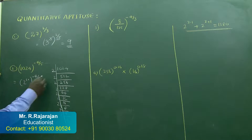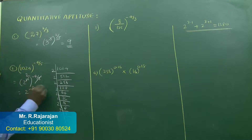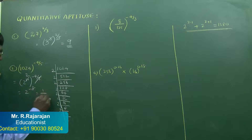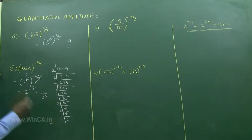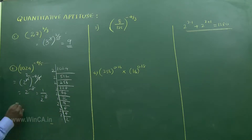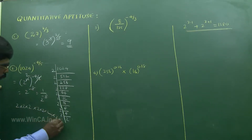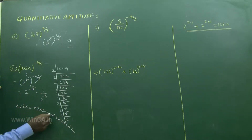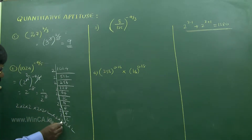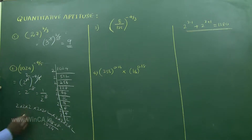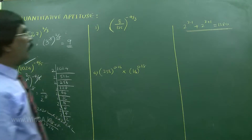You can cut this — it becomes 2 to the power of minus 8, which means 1 by 2 power 8. What is 2 power 8? Count: 2, 4, 8, 16, 32, 64, 128, 256. So 2 power 8 is 256, and 1 by 2 power 8 is 1 by 256. That is the answer.